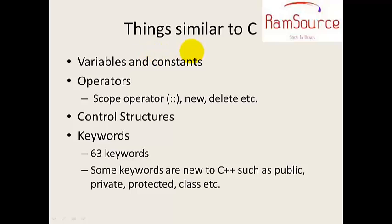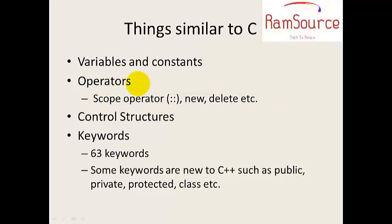Next, things similar to C: variables and constants follow the same rules and regulations. A variable must start with an alphabet or underscore and must not start with a numeric. Next are operators — arithmetic, bitwise, logical, relational, and other operators.